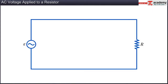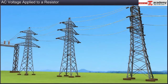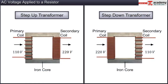In circuit diagrams, AC voltage is denoted by a sinusoidal wave in a circle. Electrical energy supplied to consumers is transmitted and distributed through power grids as alternating current. AC is preferred to DC mainly because AC voltages can be easily and efficiently converted from lower to higher voltages and vice versa using transformers.